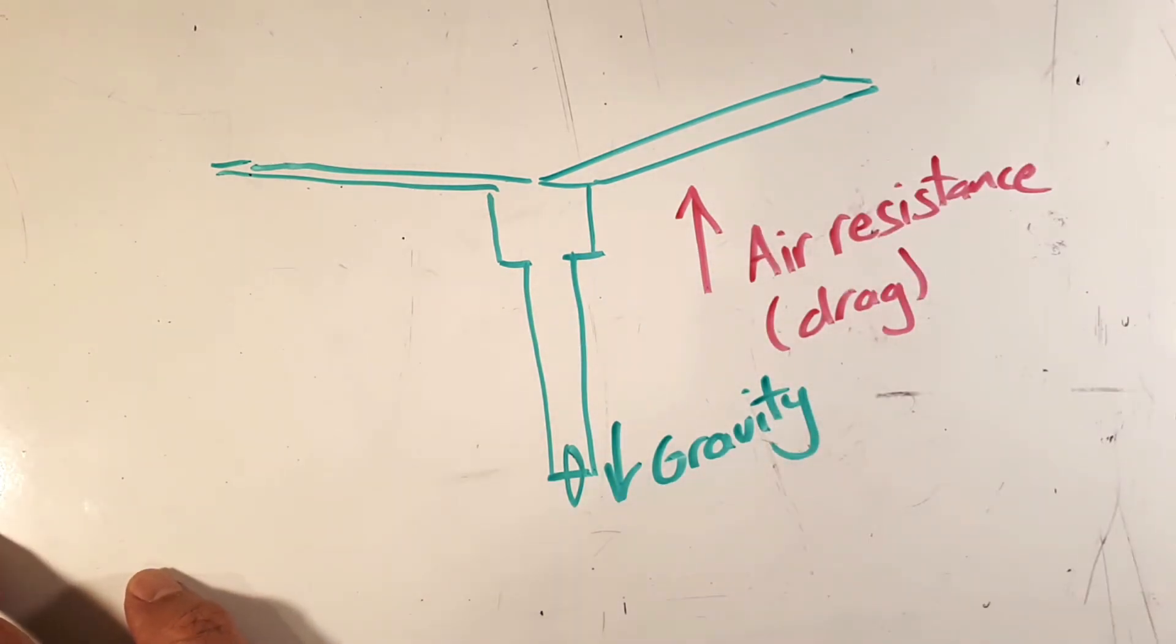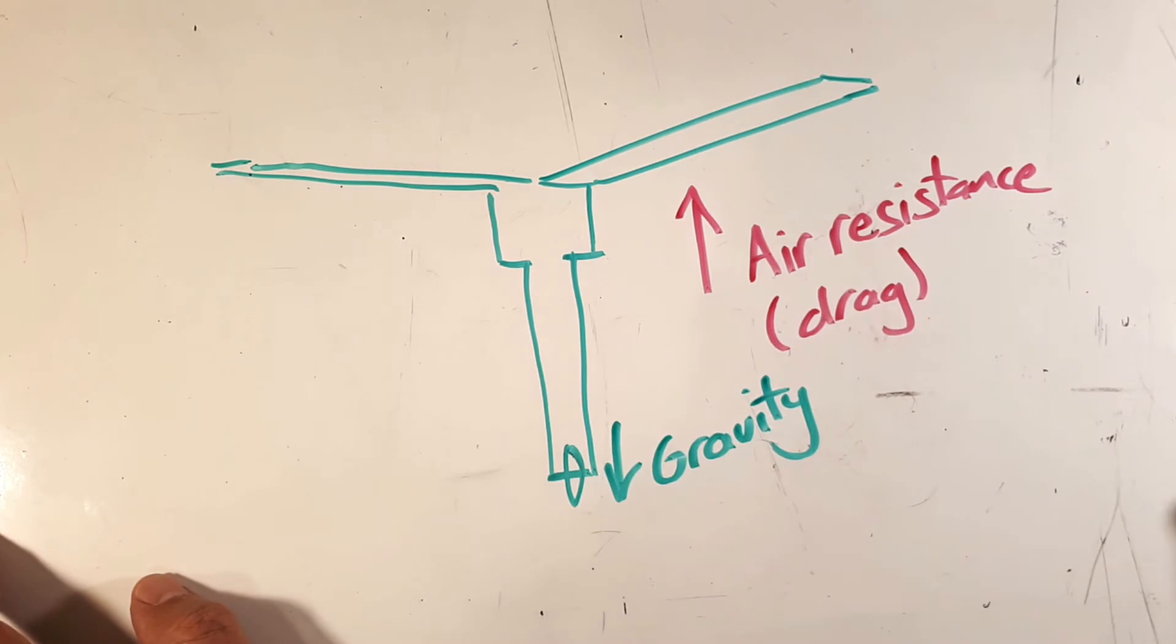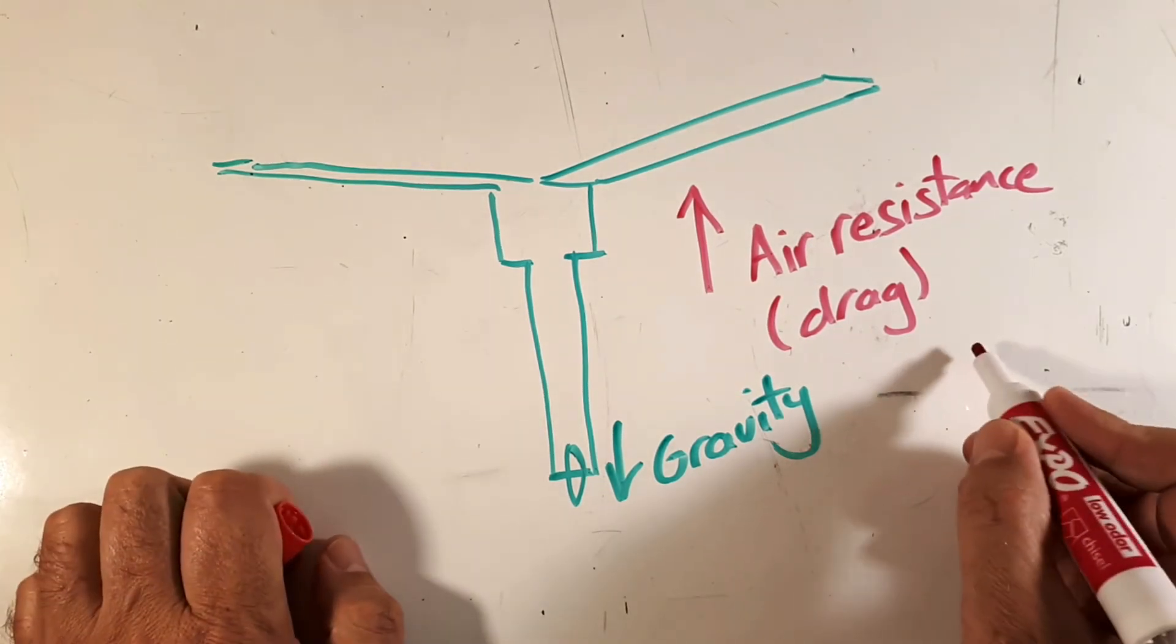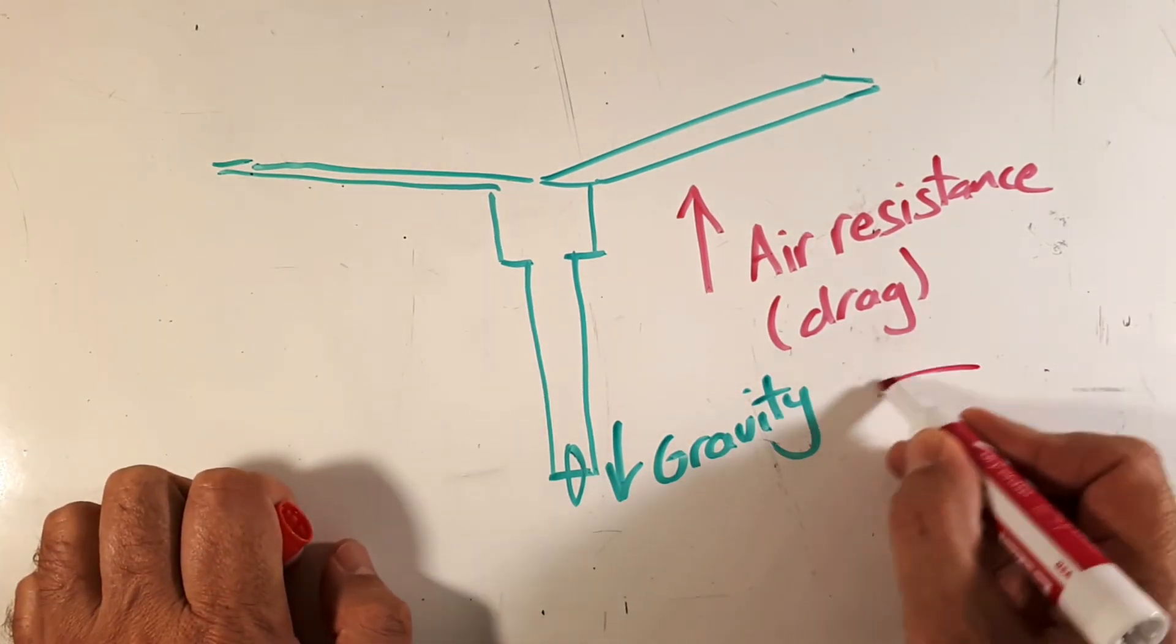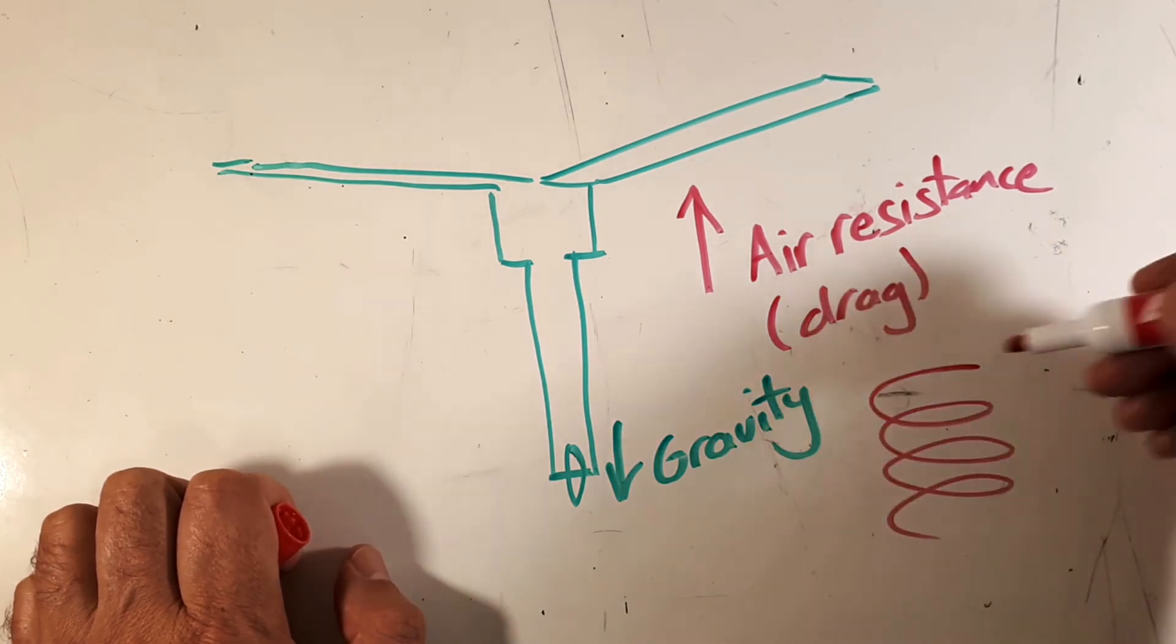Well, there's a kind of effect called auto rotation that happens. And the spinning also helps to slow it down because it's creating like a screw-like path through the air. So instead of falling straight down, it's spinning down like that, which obviously takes longer than just going straight down.